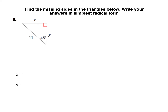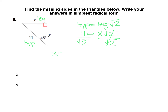In problem E, we have a 45-45-90 triangle, and it's giving me the hypotenuse. Going back to our 45-45-90 relationships, the hypotenuse is just the leg times the square root of 2. So here, 11 has to be equal to x, that's one of my legs, times the square root of 2. To get x by itself, we have to divide each side by root 2. So our x value is going to be 11 divided by the square root of 2, which once again needs to be rationalized.